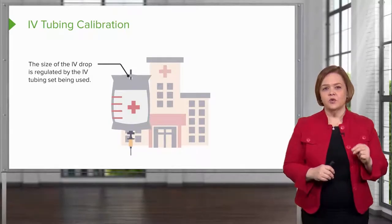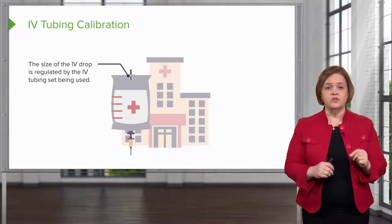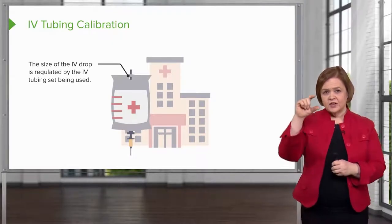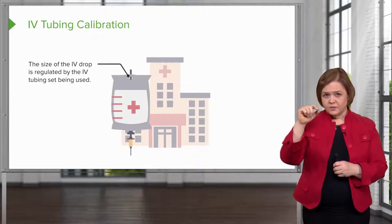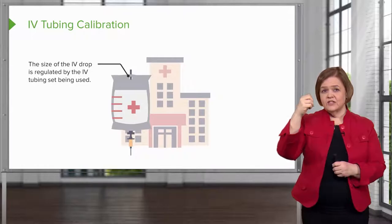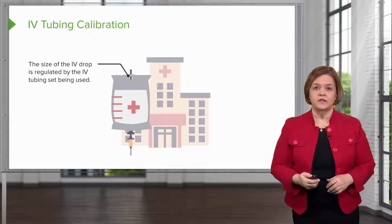The size of the IV drop is regulated by the IV tubing set being used. That means that in that drip chamber, when you see those drops come down, the volume — how much fluid is in that drop, the size of that drop — is regulated by the tubing set that you're using.